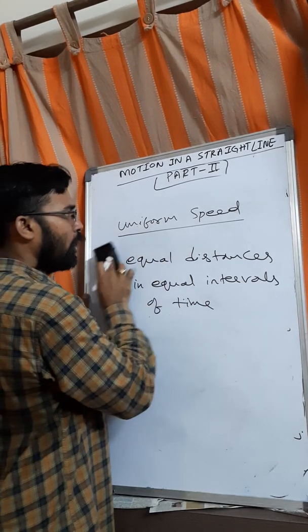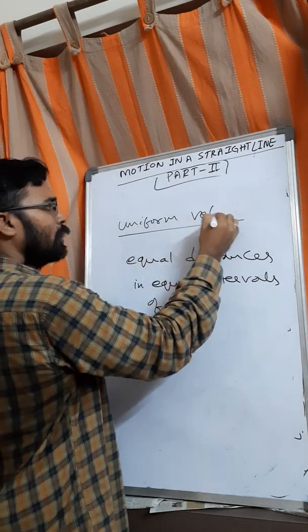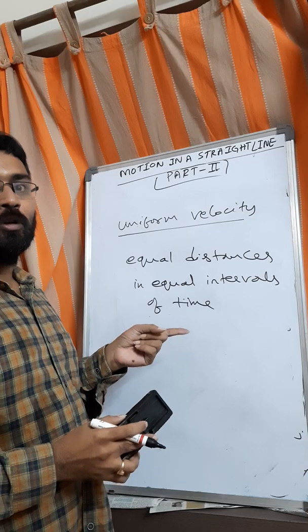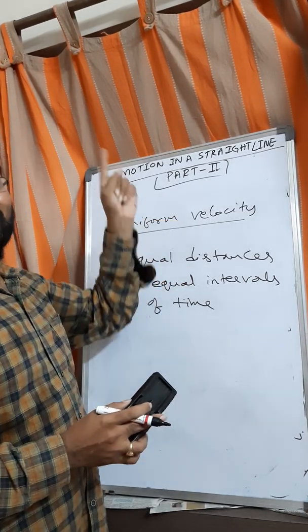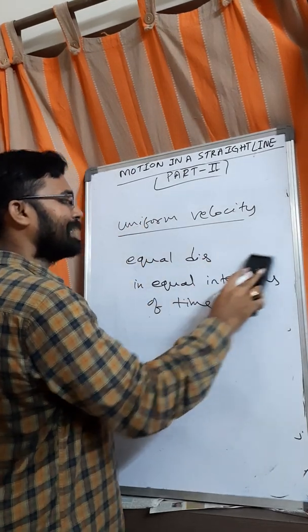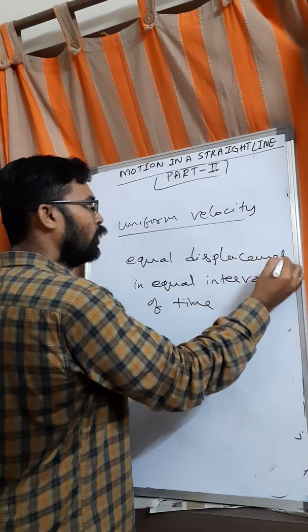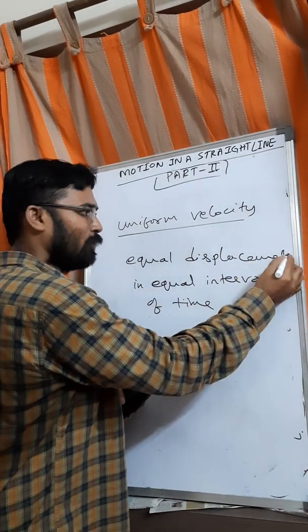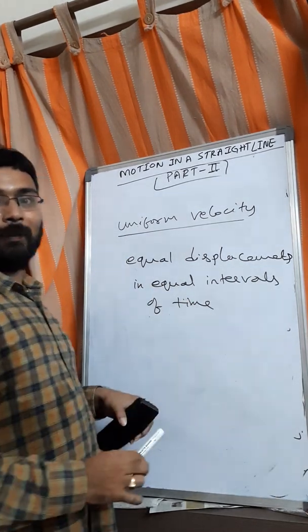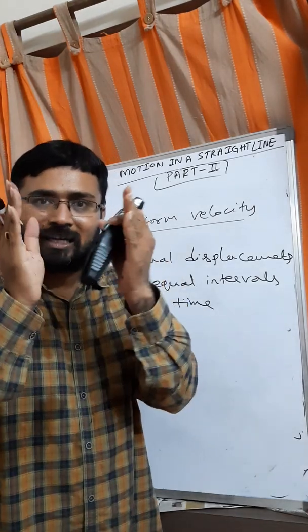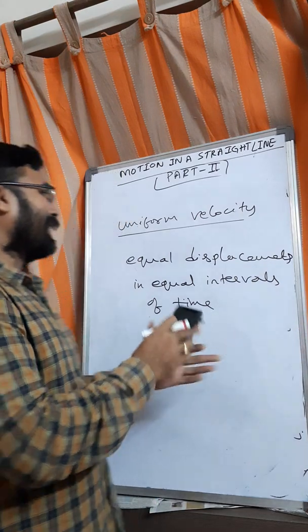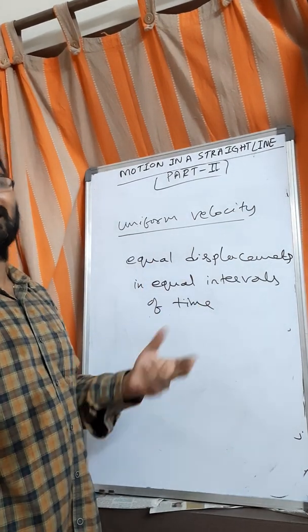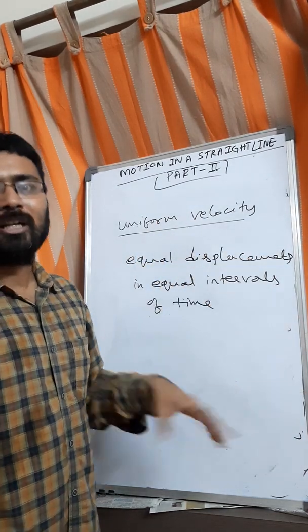The next one is uniform velocity. I think you know what change you have to make from uniform speed. We replace distance with displacement. So, uniform velocity means: if a body travels equal displacements in equal intervals of time — every particular interval of time it is travelling with the same displacement — then we call it uniform velocity. The difference: uniform speed uses equal distances, uniform velocity uses equal displacements.